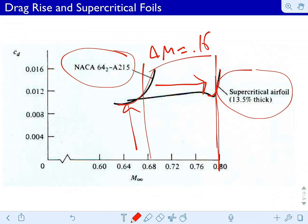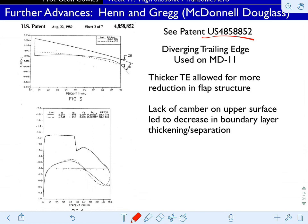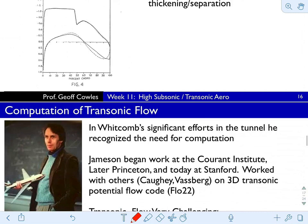There are some further advances. If you Google the patent, there are still issues where you have an adverse pressure gradient in the supercritical foil where the foil comes down to meet the trailing edge. Whitcomb wanted to address this by essentially diverging the trailing upper edge — the patent describes the strict conditions. This decreases the adverse pressure gradient and associated boundary layer thickening while maintaining higher pressure on the lower surface to keep lift up. This was featured in the MD-11, which was one of the dominant transports.